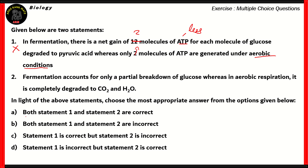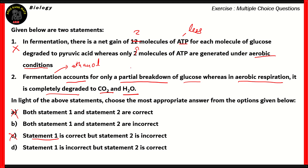Among the options, options A and C are incorrect because both say that statement 1 is correct, whereas in fact statement 1 is wrong. Now let's look at statement 2: Fermentation accounts for only a partial breakdown of glucose, whereas in aerobic respiration, it's completely degraded to carbon dioxide and water. In fermentation, carbon dioxide and water form, but there is another byproduct — ethanol — so it only has a partial breakdown. In aerobic respiration, the glucose is completely degraded to carbon dioxide and water. So statement 2 is the correct statement.